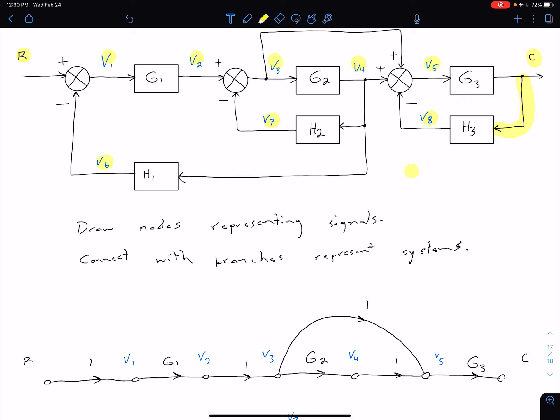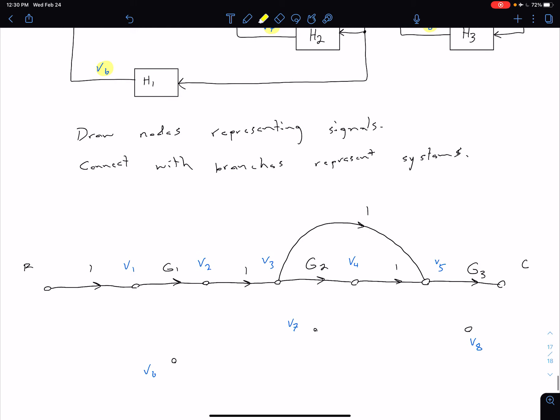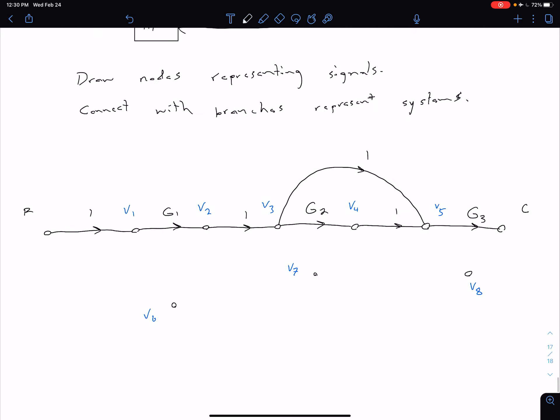So coming down here, we can say to get from C to V8, we have to multiply by H3.